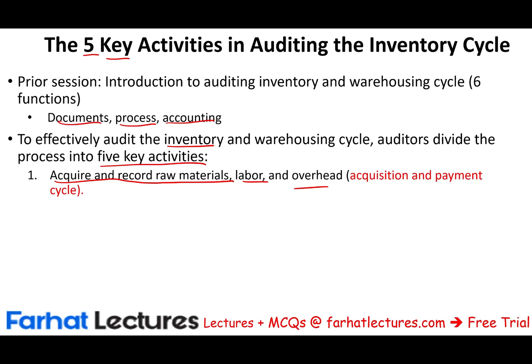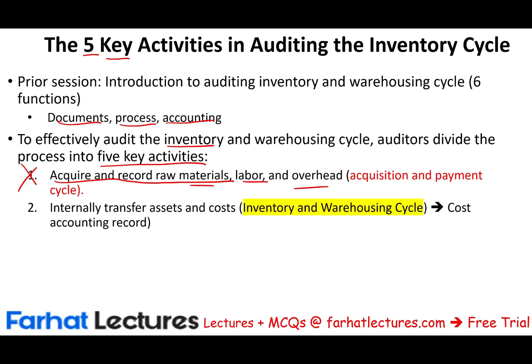This part is already covered. After we acquire material, labor, and overhead, we move it into production — into work-in-process. This is where we have an internal transfer of asset and cost in the company. We're moving raw material from raw material inventory to work-in-process and allocating direct labor to work-in-process. At this stage, we need to be familiar with the cost accounting records, which is a major part of the inventory and warehousing cycle. We look at internal controls, ensure accounting is done accurately, assets are transferred properly, and everything is accounted for. We will have a whole session dedicated to the internal transfer of assets and costs, which is basically auditing the cost accounting records.